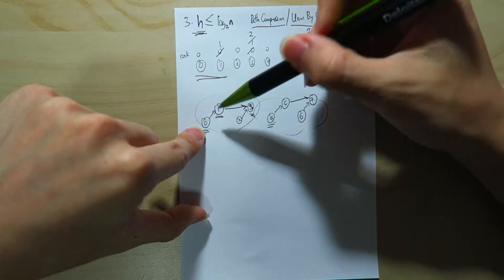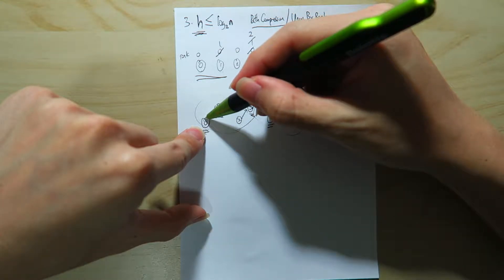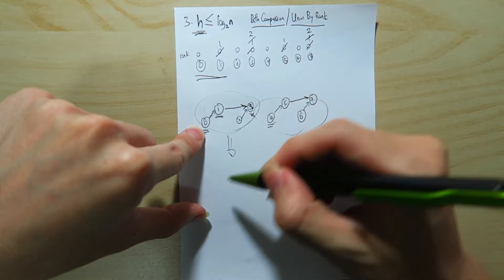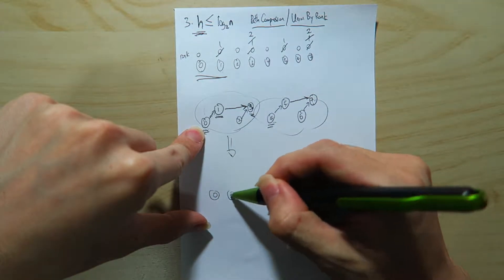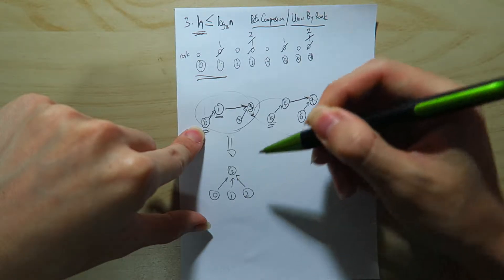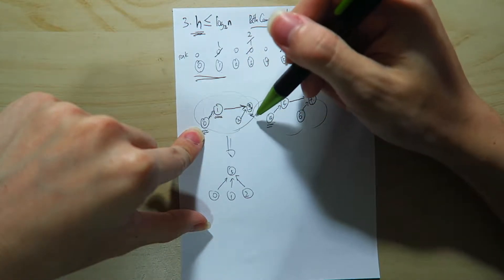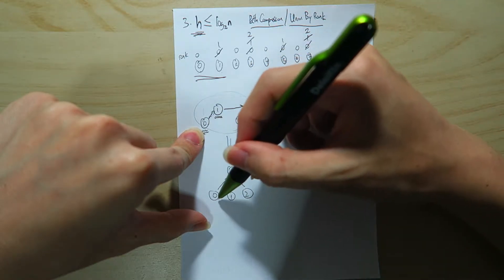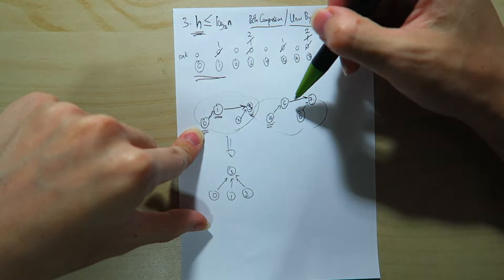But remember that during the path compression, what it's going to do is it's going to actually point straight back to 3. So this would turn into something like this, 0, 1, 2, all pointing towards 3, right? And you realize that in this case, you already lose one height, right? Because initially, the height of this tree is 2. Now the height of this tree is 1 even before you union the set.